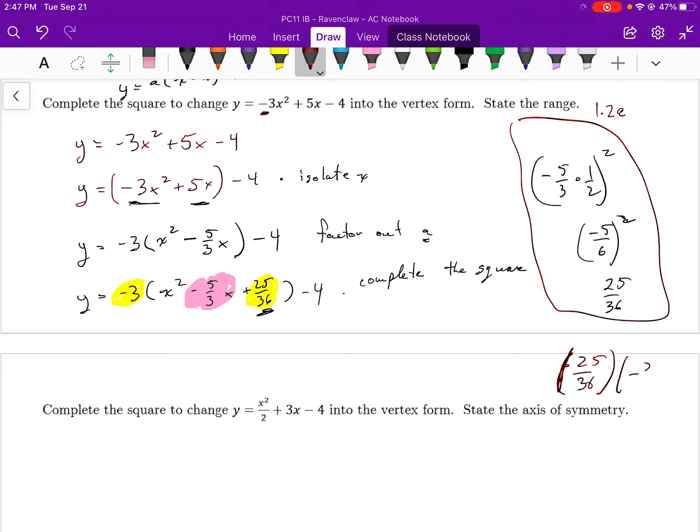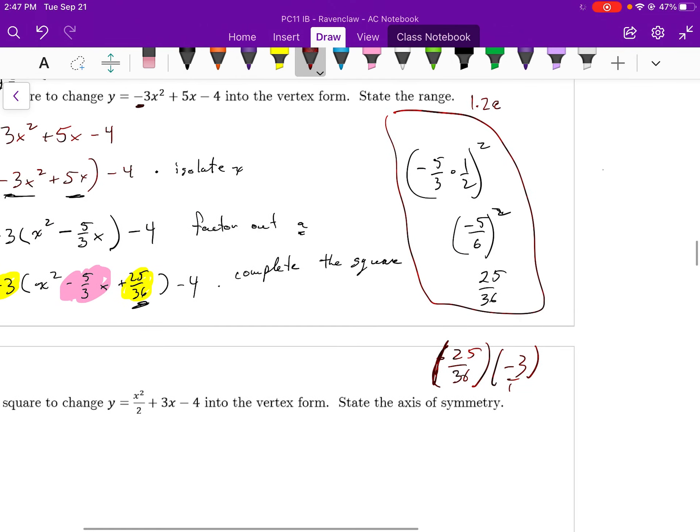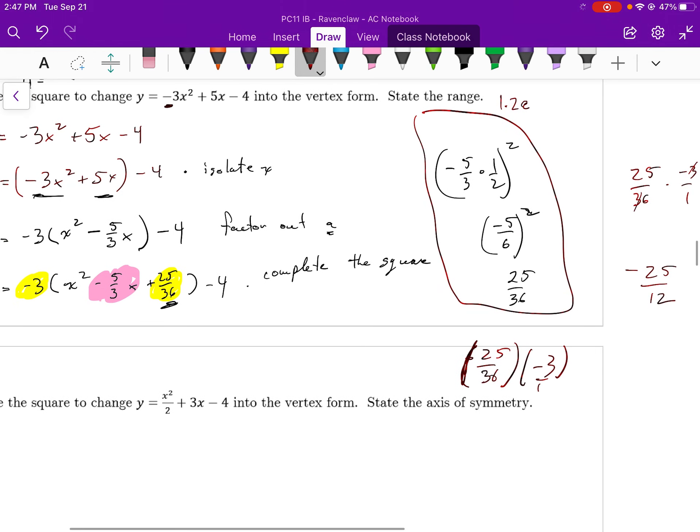We have to multiply this by negative 3, which is negative 3 over 1. And negative 25 over 36 times negative 3 over 1. We notice that we have a common factor of 3 in the top and the bottom. So this is really negative 25 over 12 that I added.